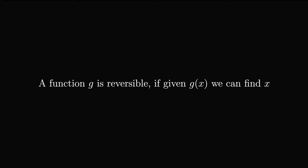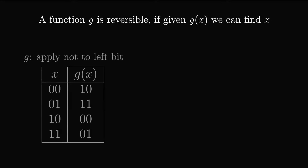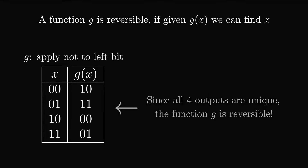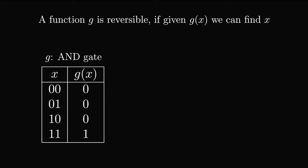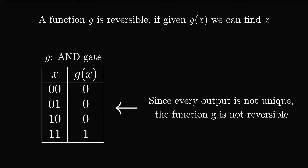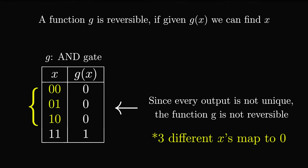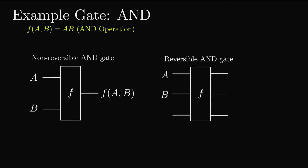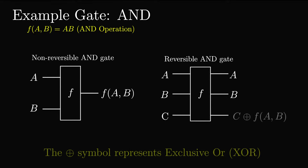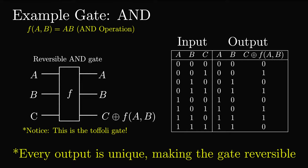If a function is reversible, then given the output we can determine the input. For example, if we have an operation that negates the first bit, we know what the input was, as each row of the outputs in the truth table can uniquely identify the input. If we look at the AND gate truth table, however, we can't tell what the input was if it outputs a 0 — it could have been any one of three different inputs, so the gate is not reversible. But we can make any gate reversible by returning the inputs, as well as inputting another bit C and exclusive ORing it with the output f(x). Each output for each input then becomes unique, allowing any operation to be made reversible.